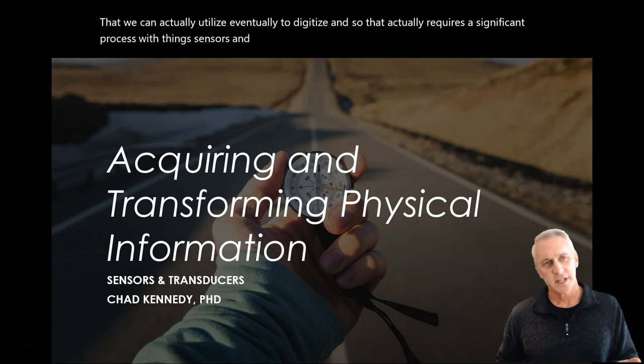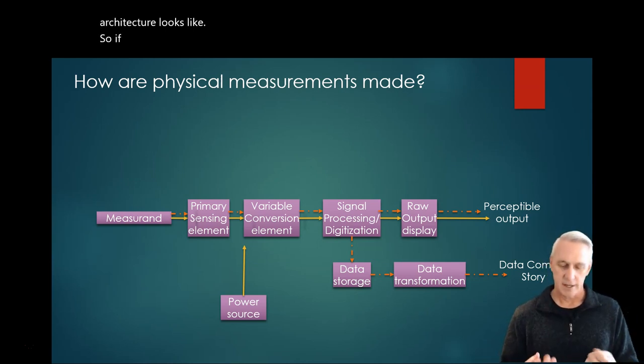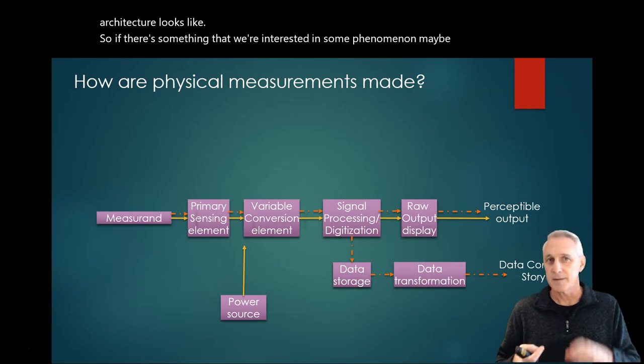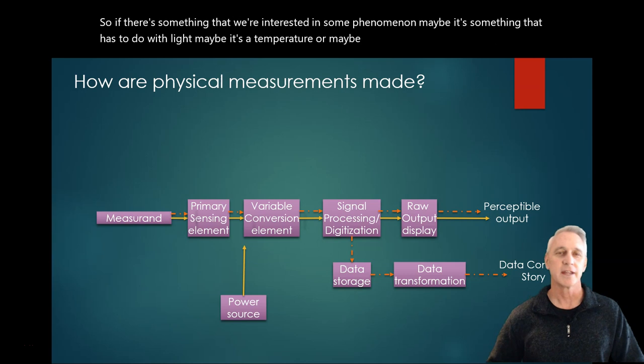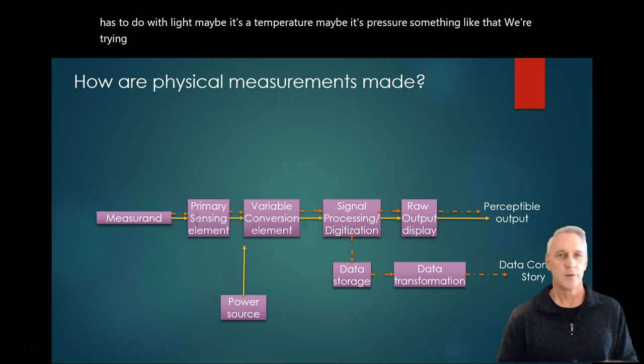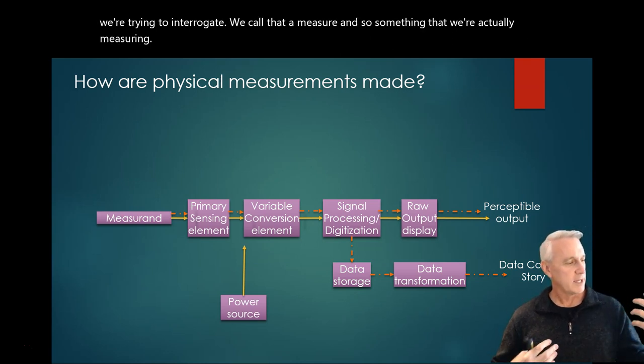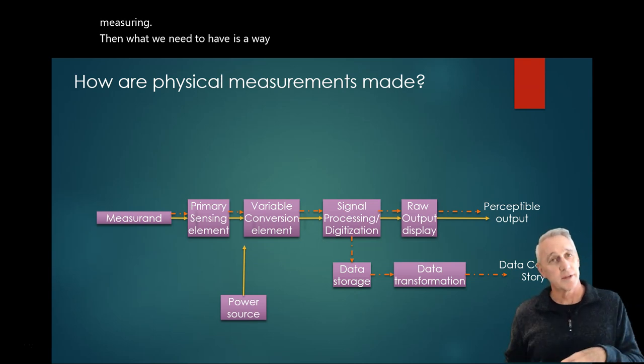Let's take a look at what that overall architecture looks like. If there's something that we're interested in, some phenomenon - maybe it's something that has to do with light, maybe it's temperature, maybe it's pressure, something like that that we're trying to interrogate, we call that a measureand. Then what we need to have is a way to convert that energy of what we're trying to measure into something that we can use.